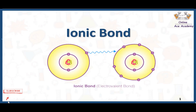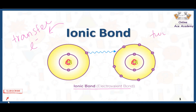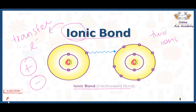In today's video we are talking about ionic bond. Ionic bond is also called as electrovalent bond. Ionic bond is actually formed by the complete transfer of electrons. It is formed between two ions — as the name indicates, it is made up of ions. When two ions, a positive ion or a negative ion, attract each other, a bond is formed between two atoms.